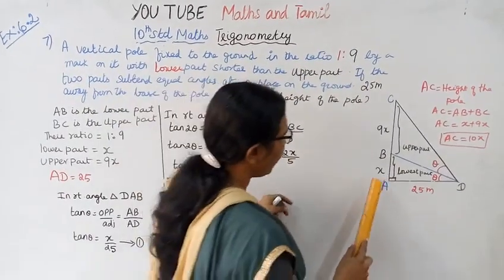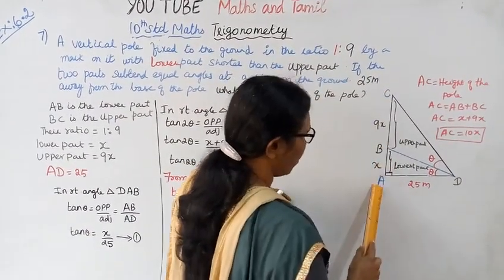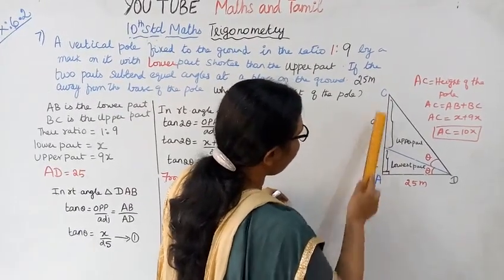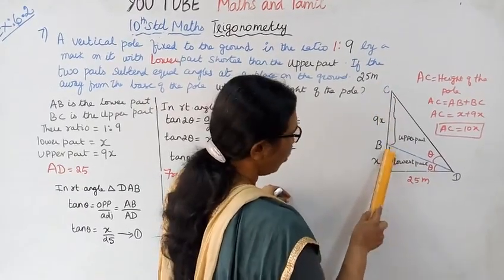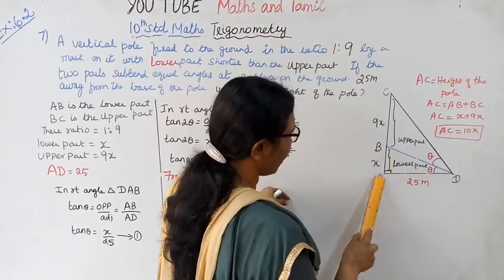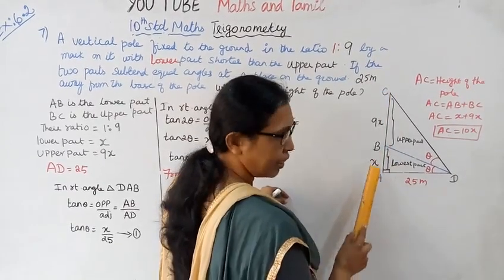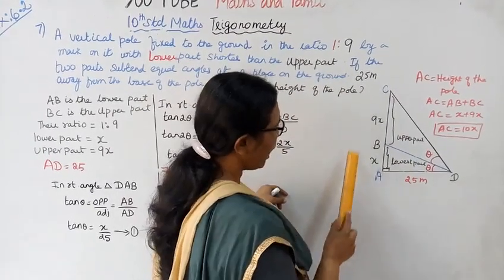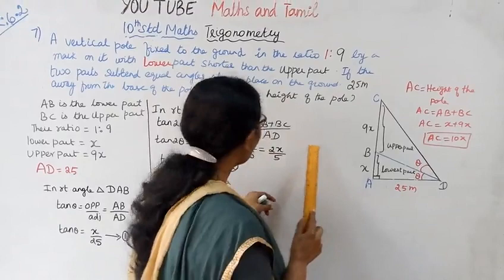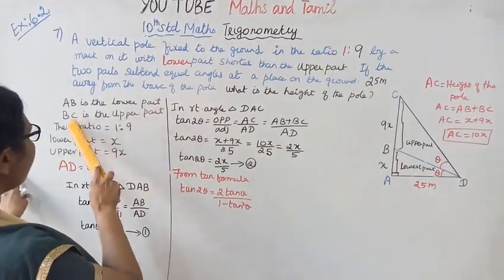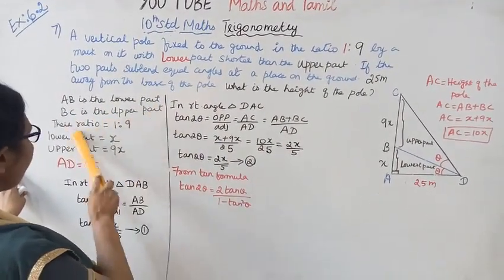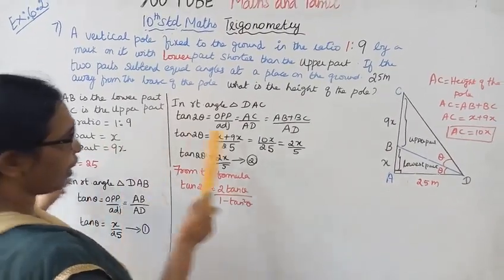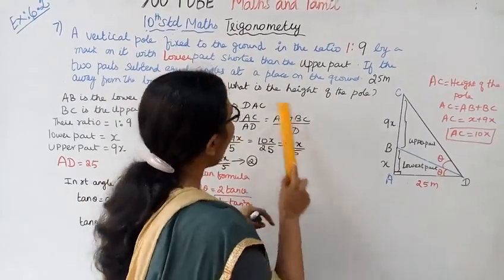Now we have shown the diagram with one pole. AC is the lower part, BC is the upper part. The ratio is 1 is to 9 — lower part is x, upper part is 9x.